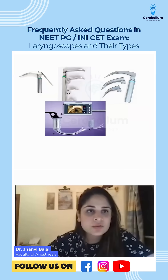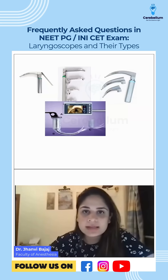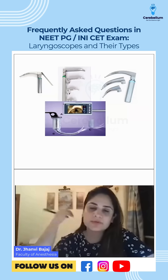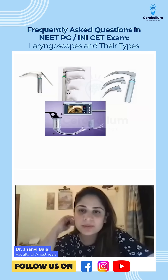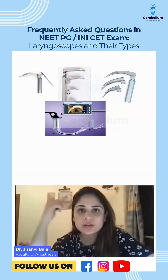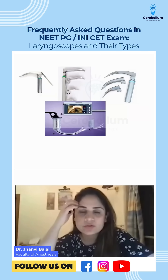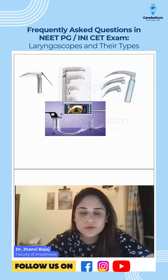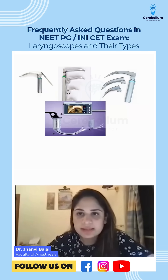These are laryngoscopes. You can inflate the cuff with either air or fluid. 99% of people prefer air, but some people also prefer normal saline (NS) to inflate the cuff. Now, for laryngoscopes, you should know the different types and how to identify them.